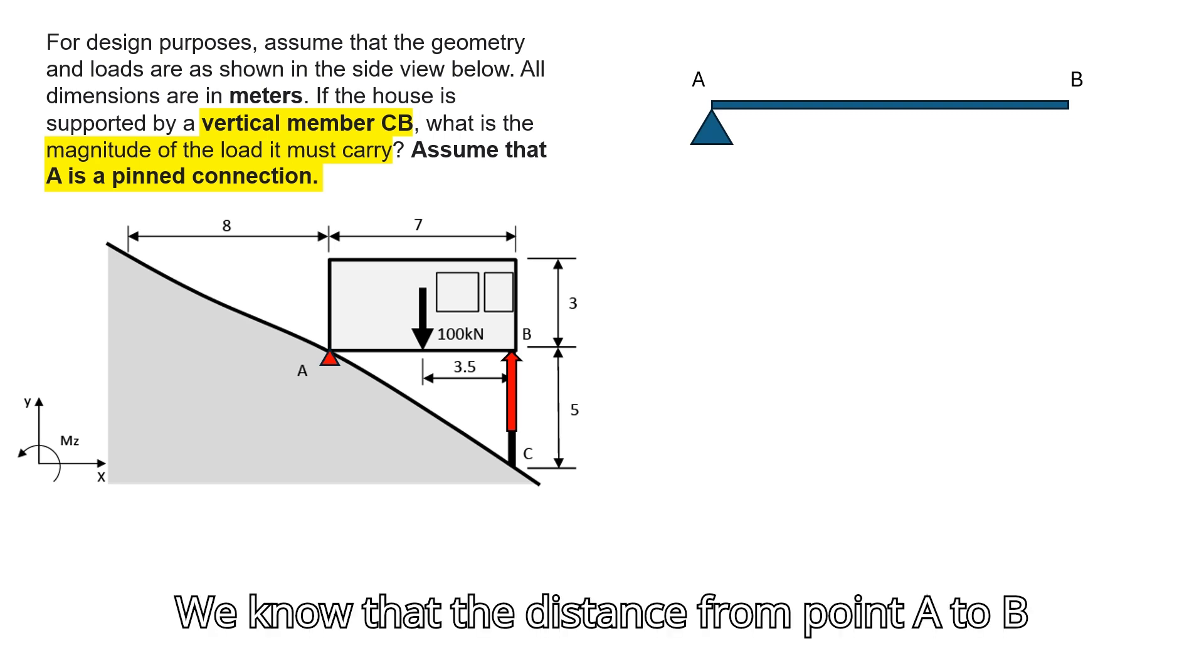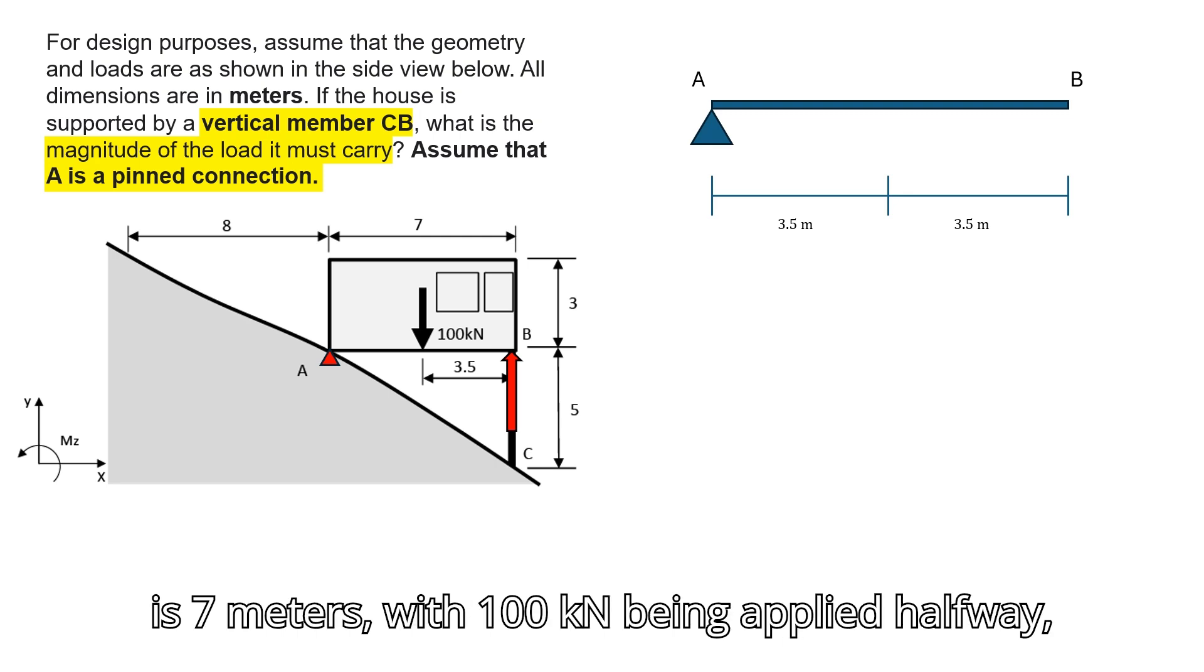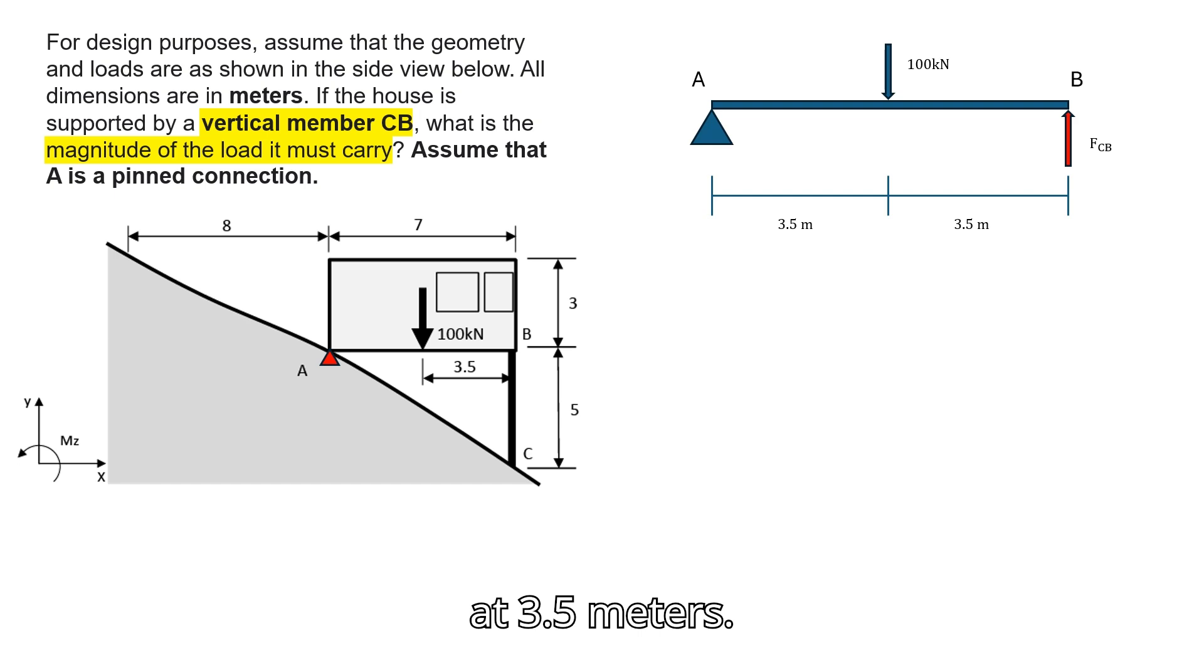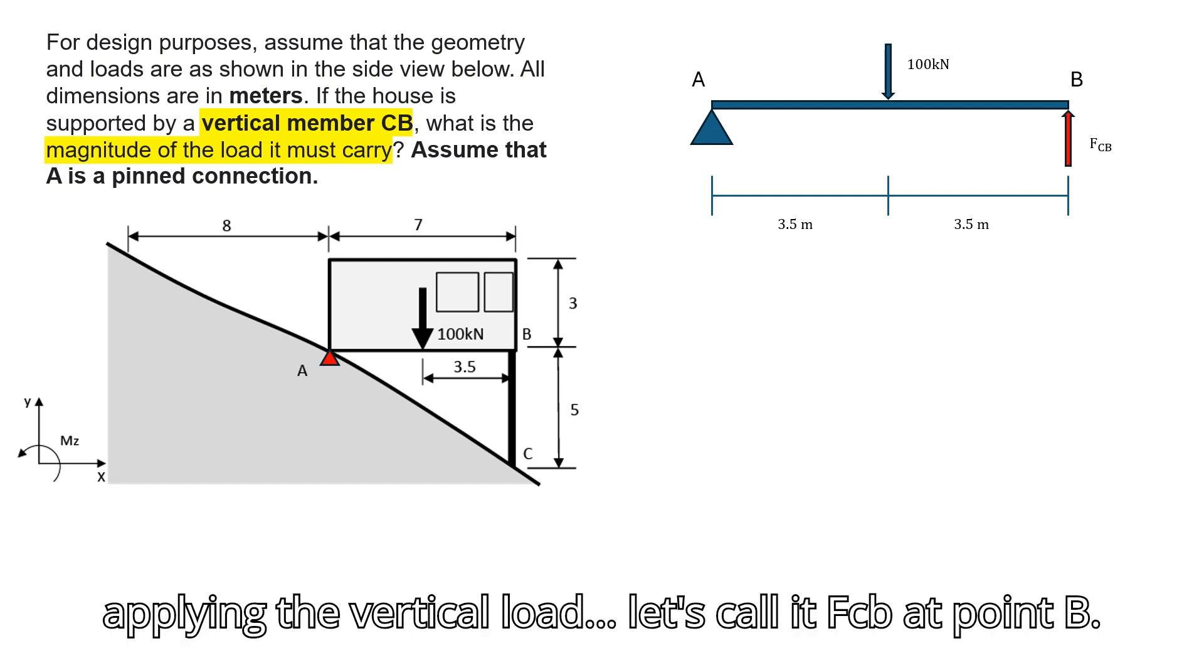We know that the distance from point A to B is 7 meters, with 100 kN being applied halfway at 3.5 meters. We also know that member CB is applying the vertical load—let's call it FCB—at point B.